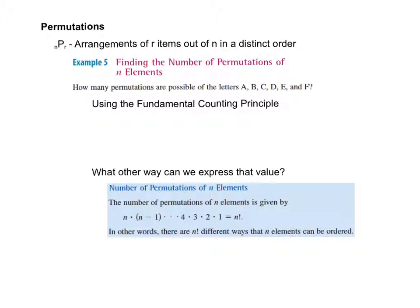As we're looking at permutations, we already mentioned yesterday that permutations are talking about arrangements in a specific order, in a distinct order. So we're going to start with a really basic problem. How many different permutations are possible for the letters A, B, C, D, E, and F? Before we figure it out mathematically, let's actually just think this through.